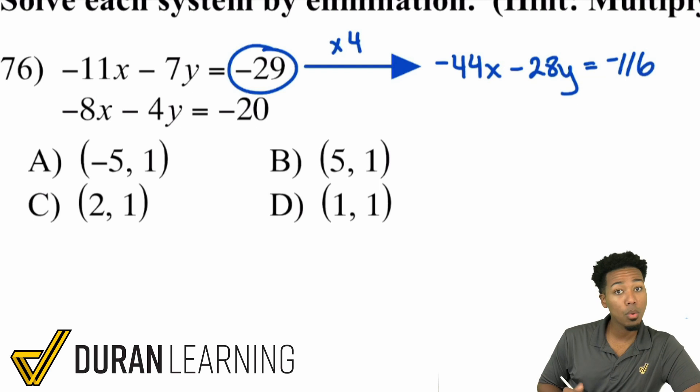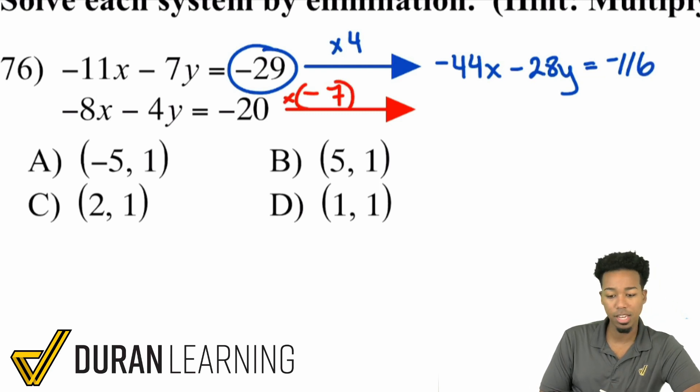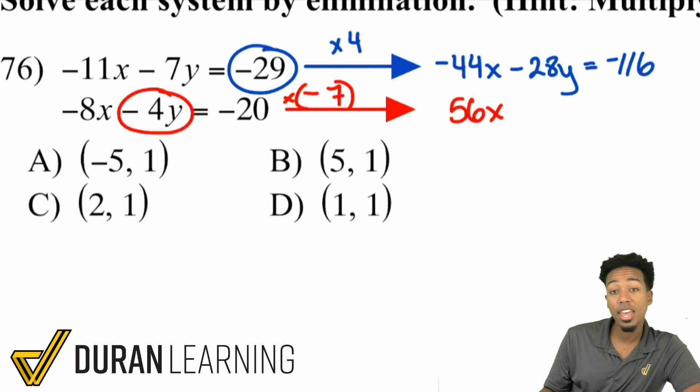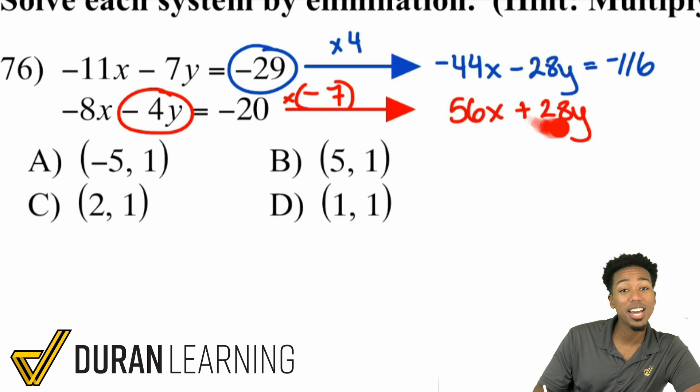Now what we're going to do next is I'm going to multiply this bottom equation by negative 7. Why negative 7? Watch this. Negative 8x times negative 7 is going to be positive 56x. This is where I want you to pay attention. Negative 4y times negative 7 is a positive 28. And look at that right here. We have a negative 28 and a positive 28 that we can eliminate, giving us that chance that we were looking for to figure out what elimination is.